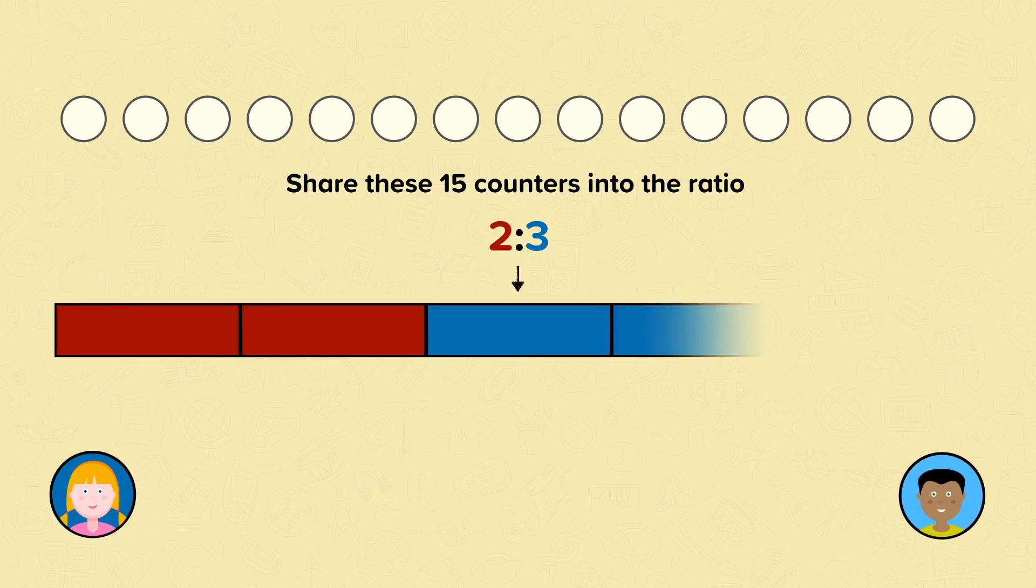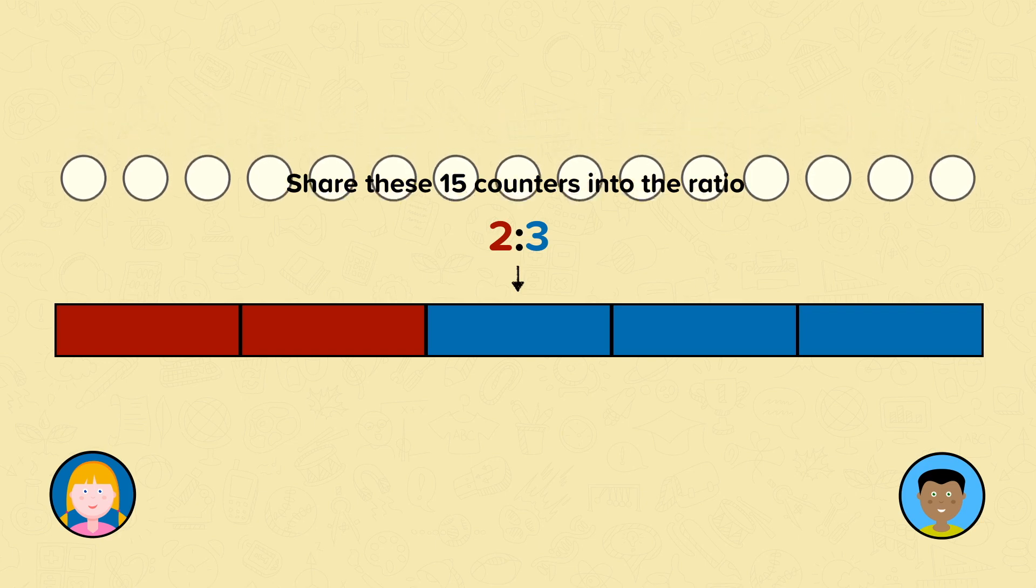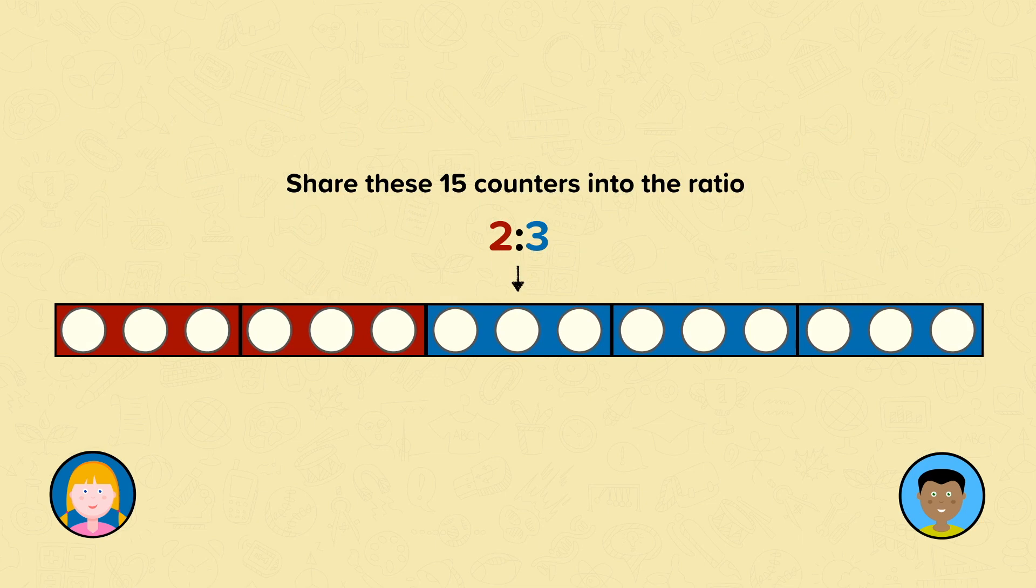Draw a bar diagram to help. There are two parts red and three parts blue. Divide the 15 counters equally into the 5 parts. 15 divided by 5 equals 3.